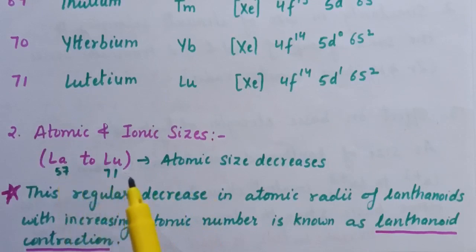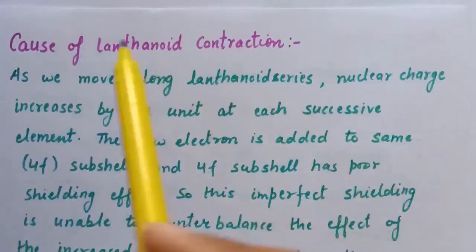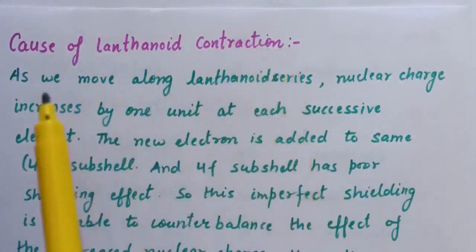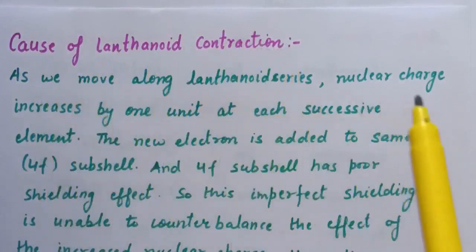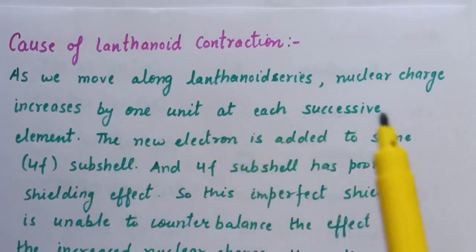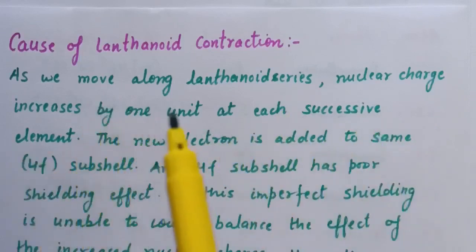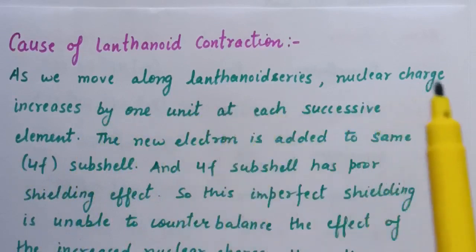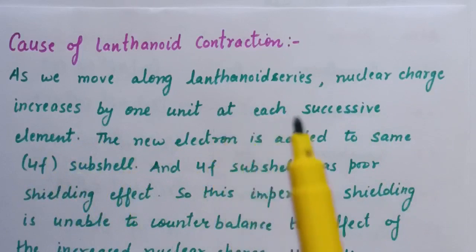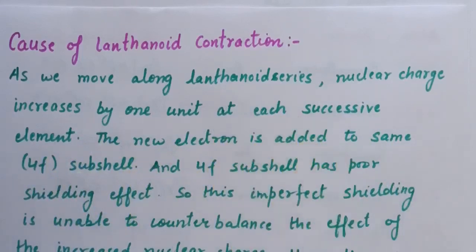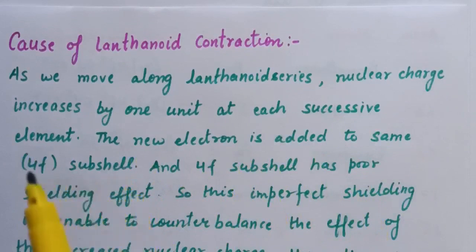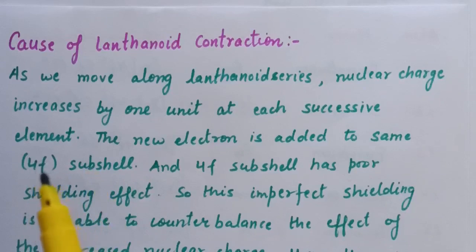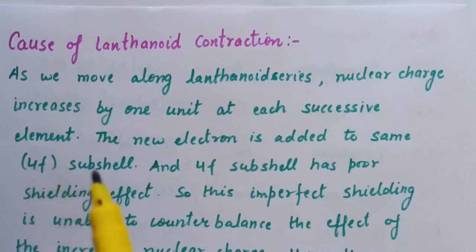This regular decrease in atomic radii of lanthanoids with increasing atomic number is known as lanthanoid contraction. Due to lanthanoid contraction, there is a gradual decrease in atomic size when we move from atomic number 57 to 71. The cause of lanthanoid contraction: as we move along the lanthanoid series, nuclear charge increases by one unit at each successive element, and this new electron is added to the same 4f subshell. The 4f orbital has poor shielding effect and will not shield the nucleus properly.